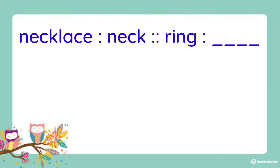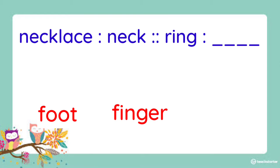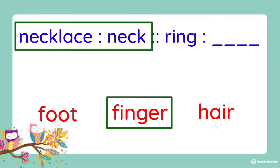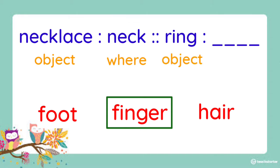Next. Necklace is to neck as ring is to blank. Is it foot, finger, or hair? What do you think is the answer? It is finger. Because for the first pair — necklace and neck — it tells where the necklace is worn, around the neck. And so for the ring, we have to think of where it is worn, and it is on the finger.